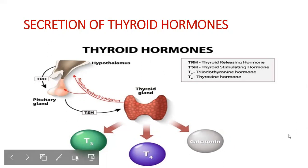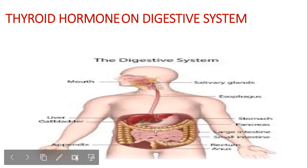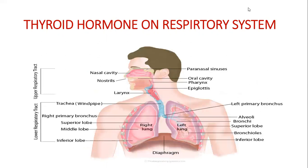Thyroid hormones have a huge impact on the digestive system, respiratory system, and cardiac activity. In the digestive system, they increase metabolism — stimulating digestion, appetite, and breakdown and absorption of nutrients. On the respiratory system, they increase oxygen consumption, breathing, heart rate, and contraction strength. They also increase heat production in the body.